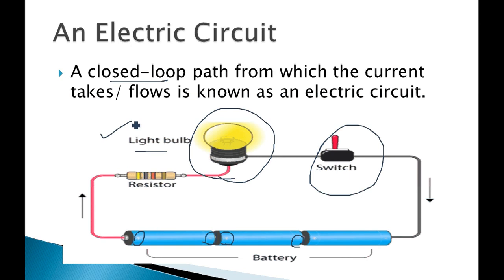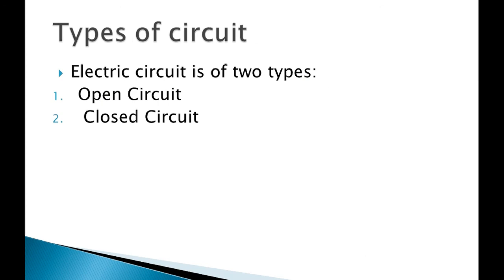This is the diagram of an electric circuit. An electric circuit is a closed path through which current can flow completely. Please draw the diagram on blank sheets. Now let's start understanding the types of circuits — we have two types of circuits.